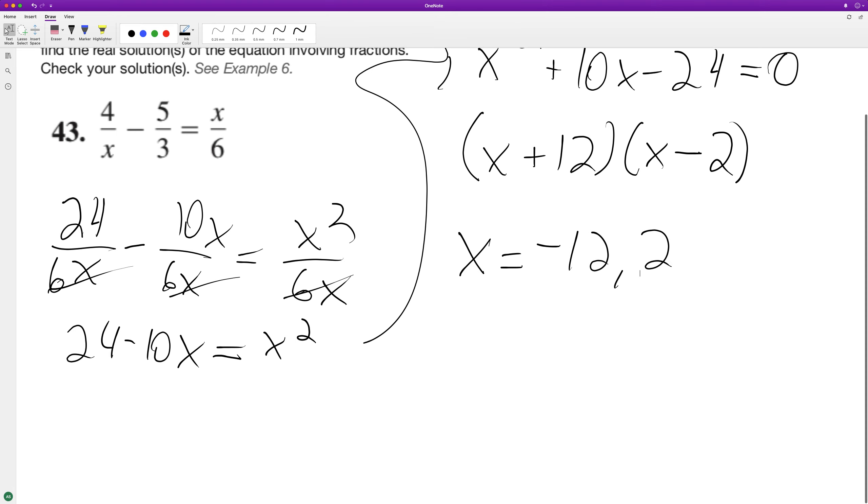So let's do 4 over 2 minus 5 over 3 equals 2 over 6. That's 2 minus 5 over 3 equals 1 third. That does equal 1 third, so 2 checks out. Let's check out negative 12.